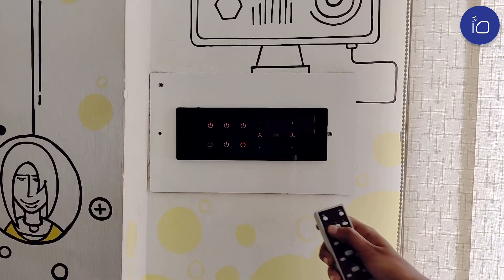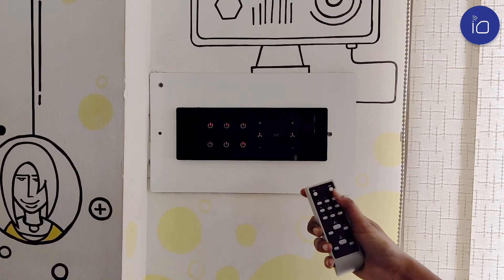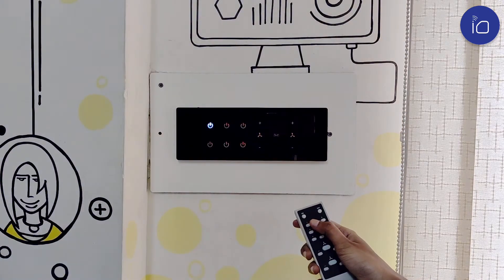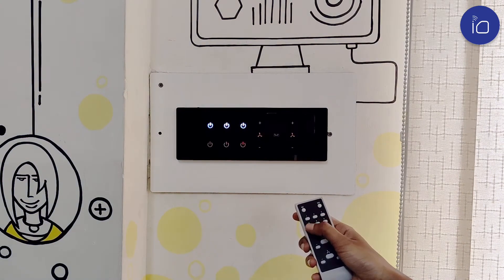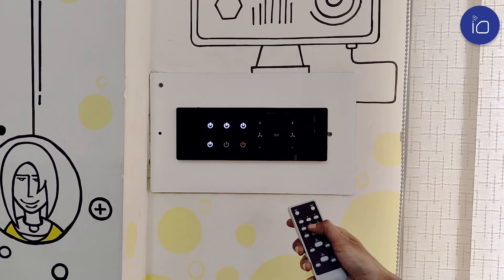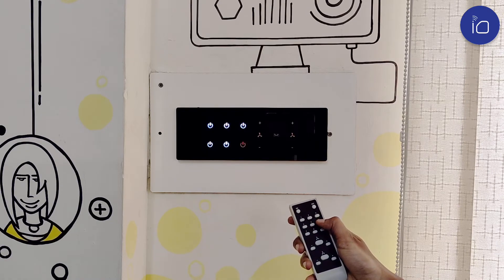Every IOTIC switch comes with a remote control that can work from up to 22 feet away. It's an extremely useful way to control your switches when you just don't want to move.